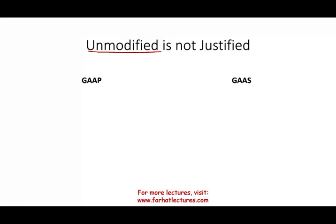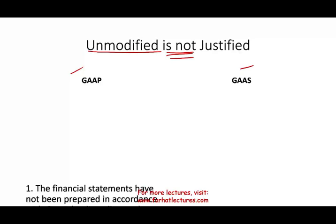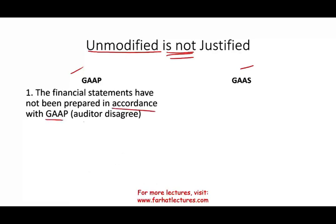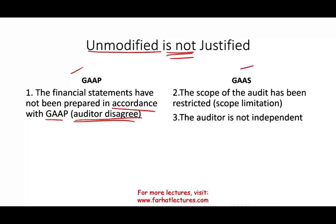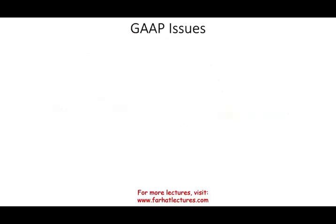When is an unmodified or clean opinion not justified? I'm going to break down the reasons into two grand categories. One is a GAAP problem — the financial statements are not prepared in accordance with GAAP and the auditor disagrees. The other is a scope limitation: we were not able to collect enough sufficient and appropriate evidence. Also, the auditor may not be independent. In this session, I'm going to focus on the GAAP issue, and in the next session I will talk about the scope issues.